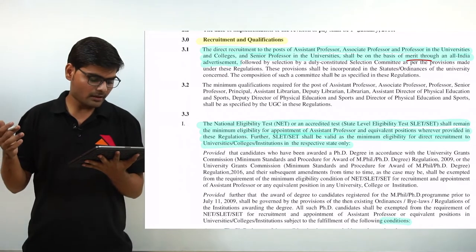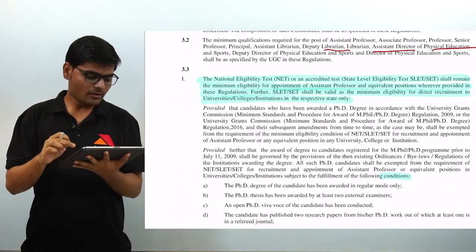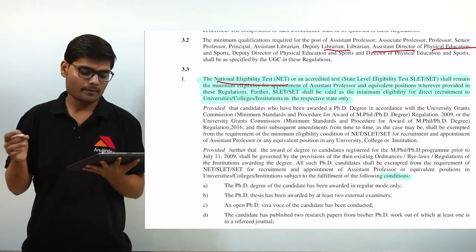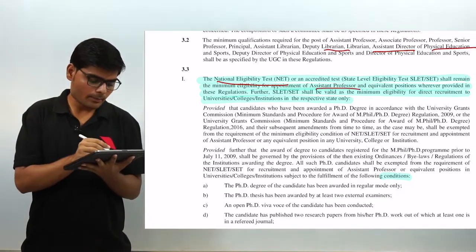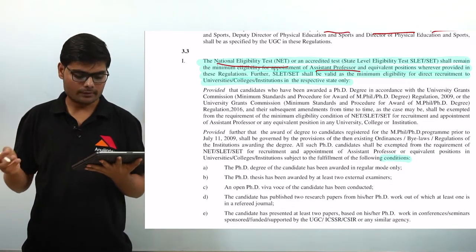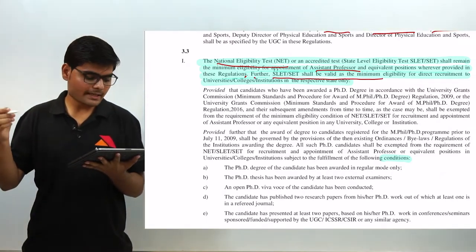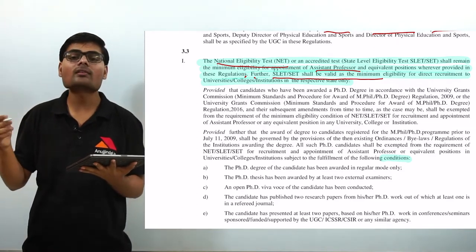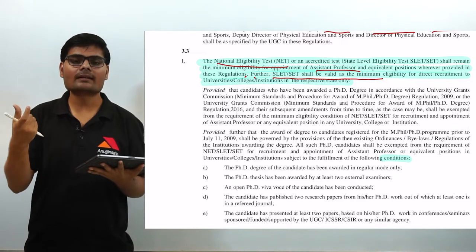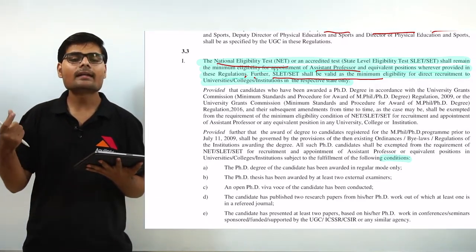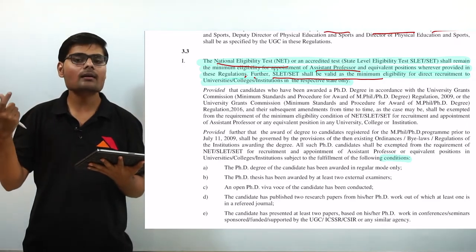Clause 3.2 says that the minimum qualification will also be applicable to the librarian, assistant director, physical education teacher and all others. Clause number 3.3 states that the National Eligibility Test NET or State Level Eligibility Test SET or SLET shall remain the minimum eligibility for appointment of assistant professor. NET will be the minimum qualification or equivalent position where provided in the regulation. SET or SLET shall be provided as the minimum eligibility for direct recruitment to universities, colleges and institutions in the respective state only.